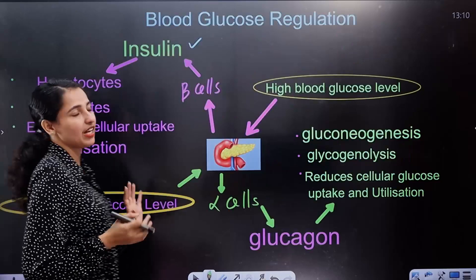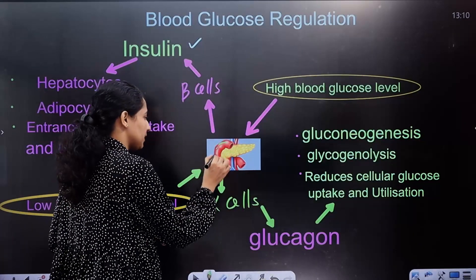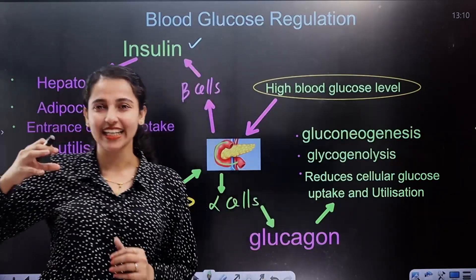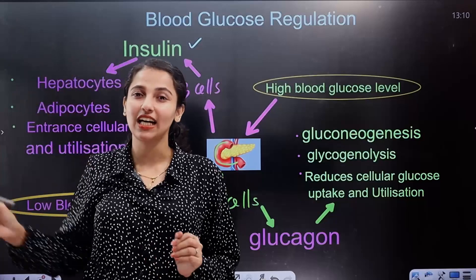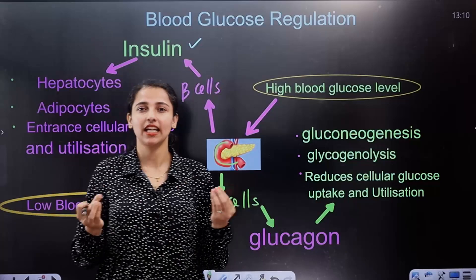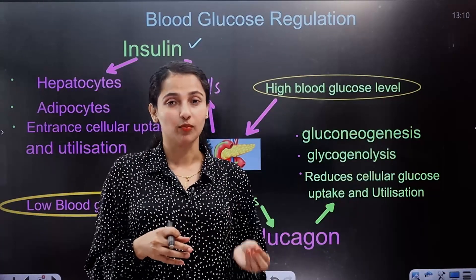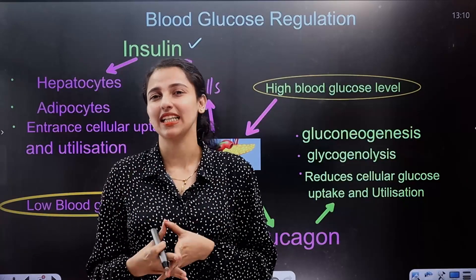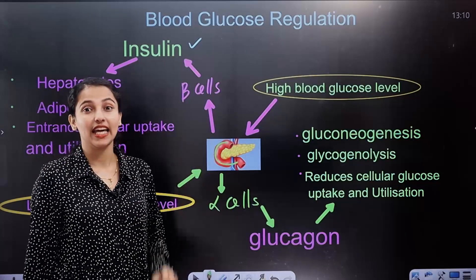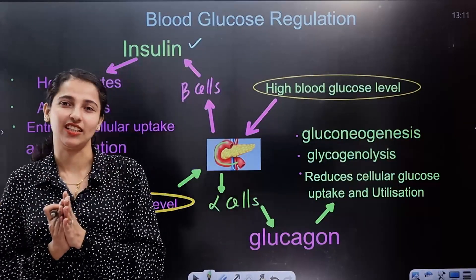We are going to talk about the pancreas gland. This pancreas gland has both endocrine and exocrine properties — that is, both hormones and enzymes are released from it. We are going to learn how it maintains blood glucose level.